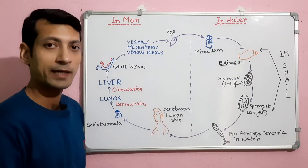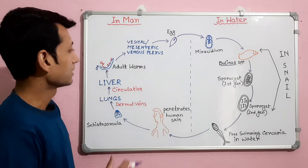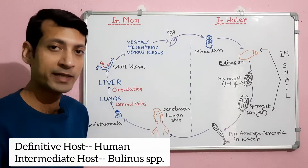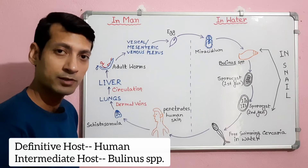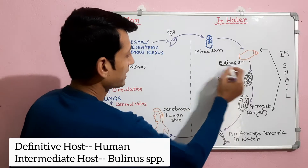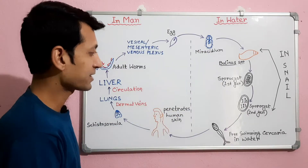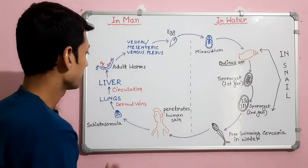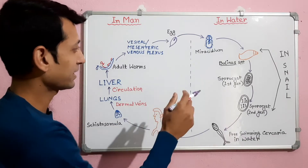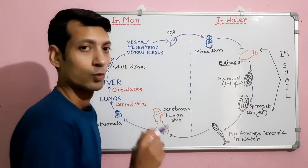Here I have drawn a diagram to explain the life cycle of Schistosoma haematobium. The parasite requires two hosts: one definitive host and an intermediate host. Man is the definitive host, and freshwater snail of the genus Bulinus is the intermediate host. We can divide the life cycle into two phases: development in human and development in freshwater snail in the water environment.